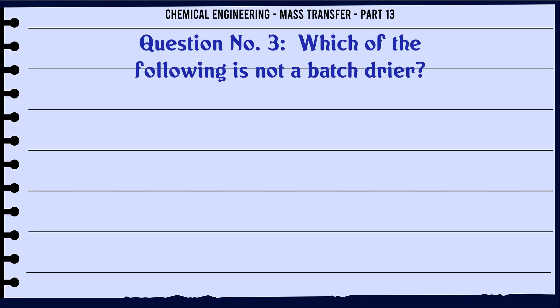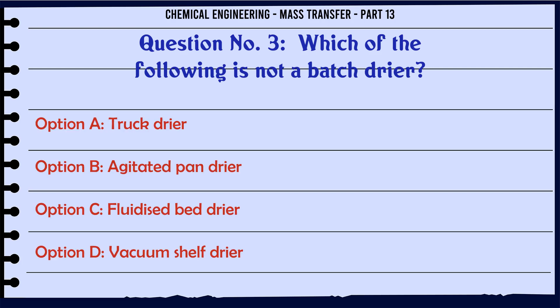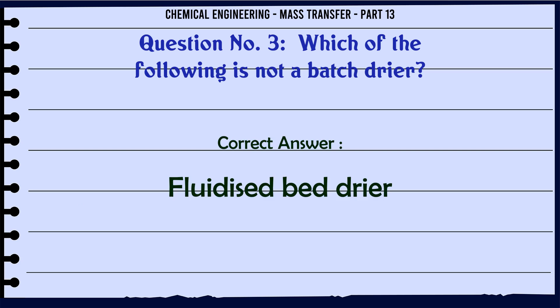Which of the following is not a batch dryer? A. Truck dryer. B. Agitated pan dryer. C. Fluidized bed dryer. D. Vacuum shelf dryer. The correct answer is: Fluidized bed dryer.